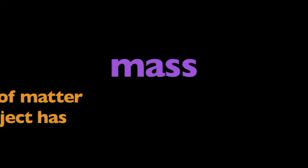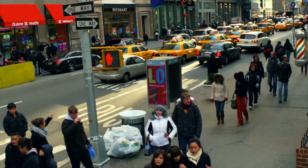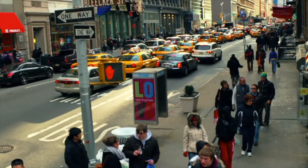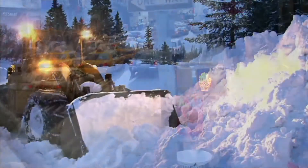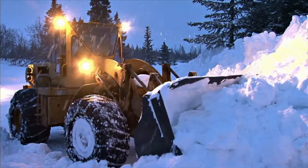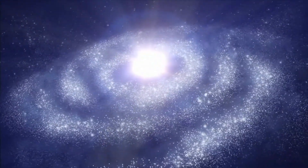In this program, we're going to learn about mass. What is mass? Mass is the amount of matter that an object has. Matter is in everything around you — it is the stuff that things are made of. Matter is anything that takes up space. The more matter something has in it, the more mass it has too.